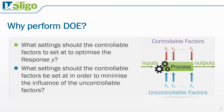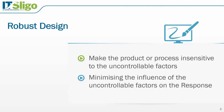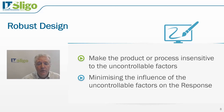We perform experiments in order to find out about the process. In relation to the process, there are a number of controllable factors — ones that we can actually control ourselves. There are other uncontrollable factors that we may have little or no influence on. We have the output of our process, which is our response. We would like to set the controllable factors in such a way that they optimize the output or the response, and also minimize any influence of the uncontrollable factors. This is often performed when we conduct a robust design. In a robust design, we want to make our product or process insensitive to the uncontrollable factors.